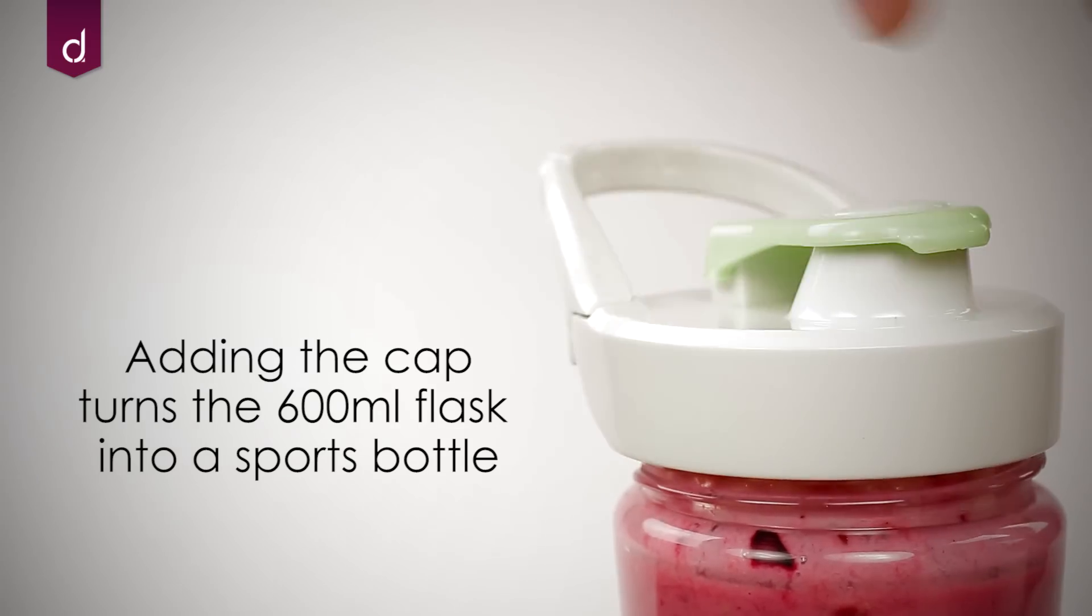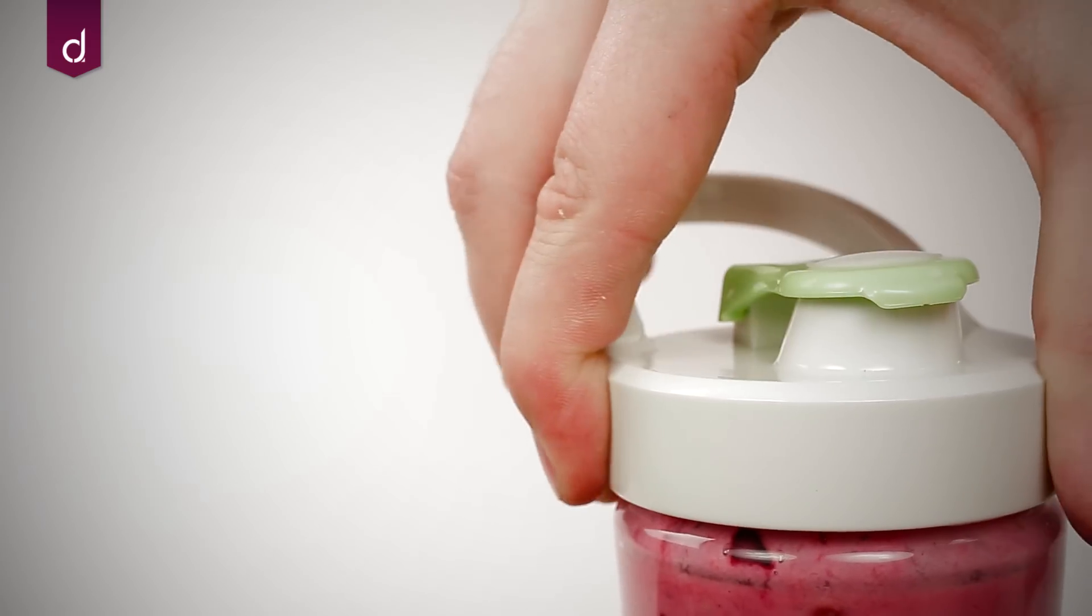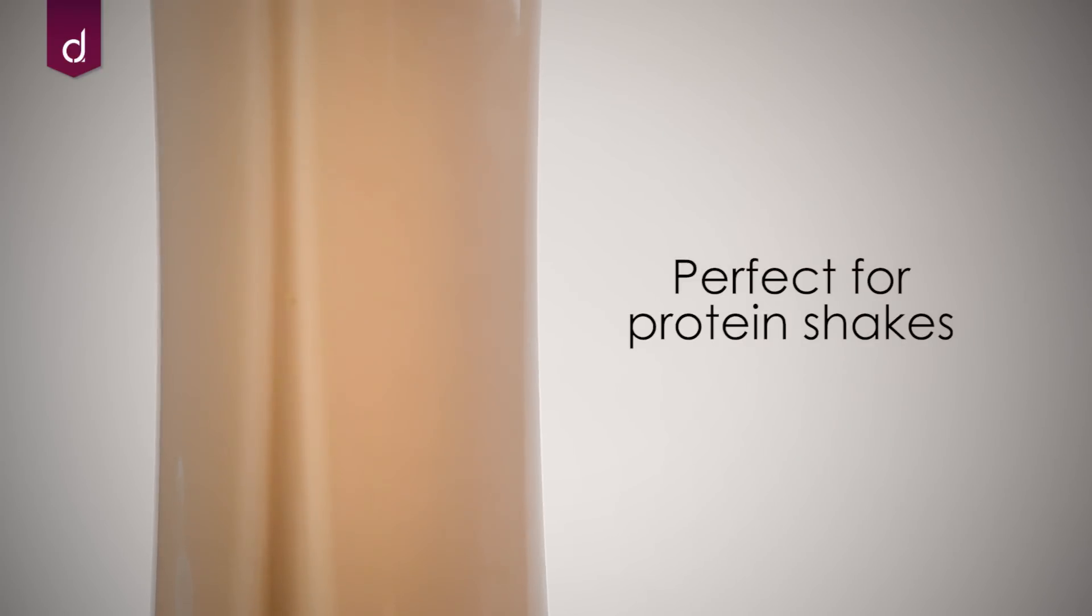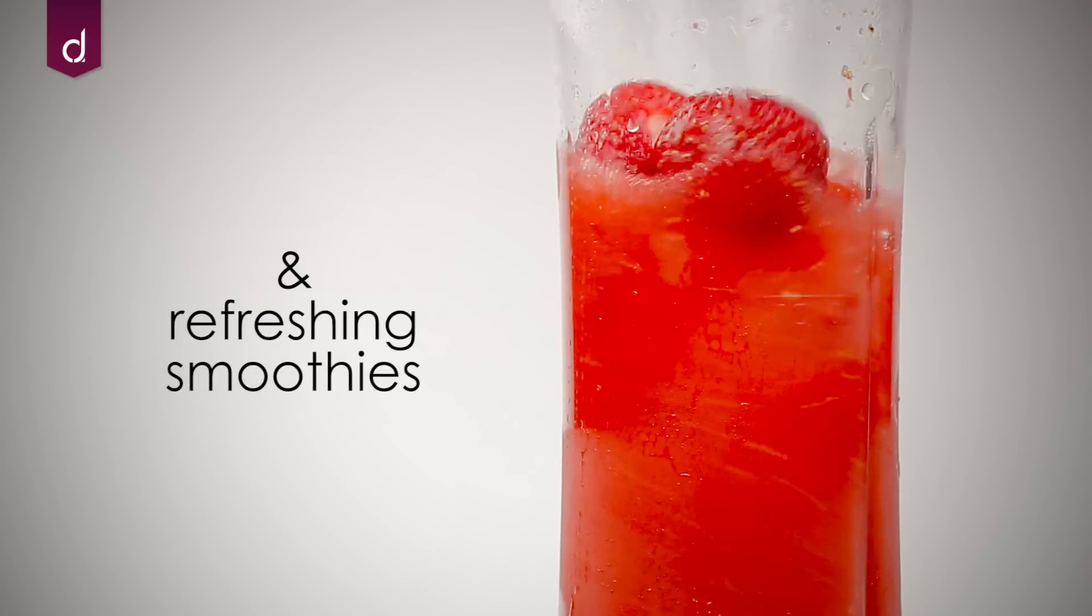Adding the cap turns the 600ml flask into a sports bottle and the juicer comes with two. It's perfect for protein shakes and refreshing smoothies.